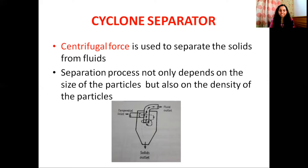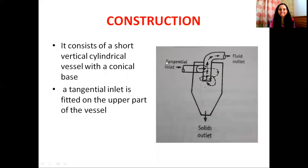We will start with the construction of Cyclone Separator. Cyclone Separator is a cylindrical, vertical, short vessel. The vessel is formed from a conical bottom. The conical bottom is a short, vertical, cylindrical vessel in the Cyclone Separator.